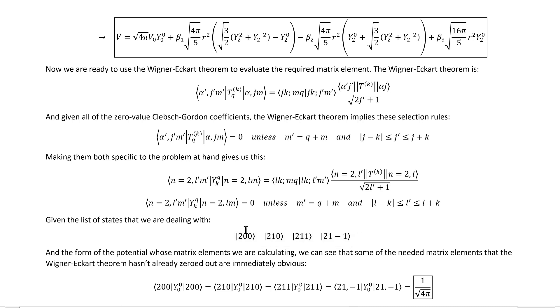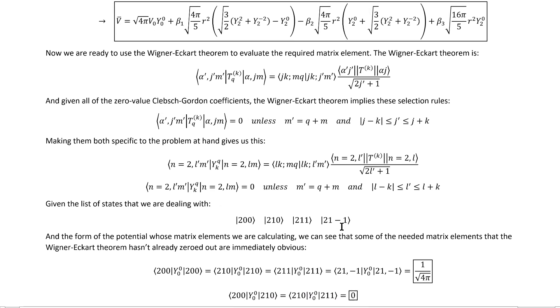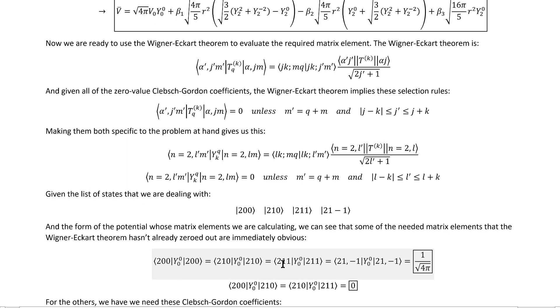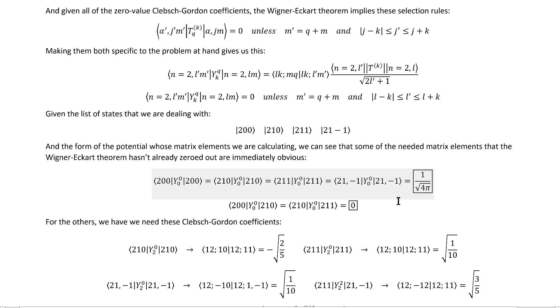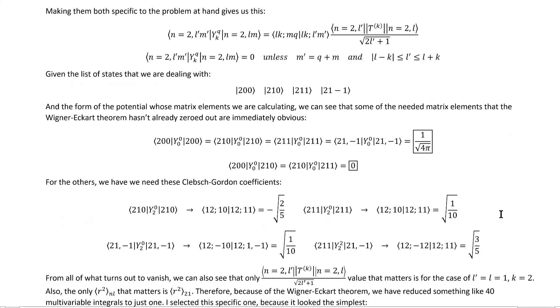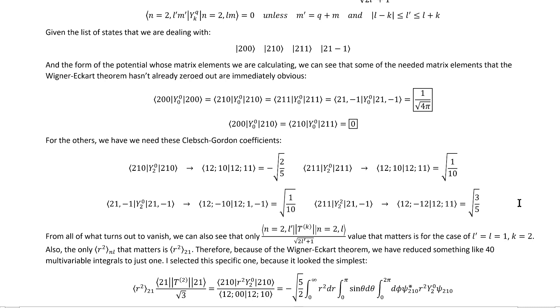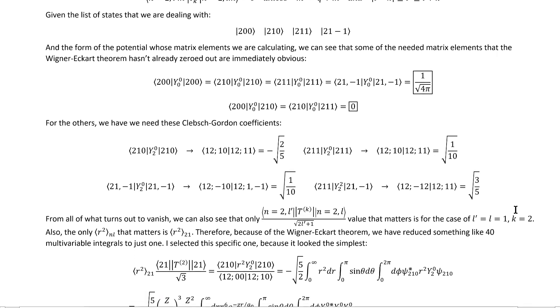If we go state by state and term by term, we actually find six matrix elements that are immediately evaluatable without having to use the Wigner-Eckart theorem or doing any integrals. And that works out because y0, 0 is just a constant so you can pull it out and then orthogonality handles the rest. Unfortunately, however, this doesn't handle all of the remaining matrix elements. There are a total of four of them that aren't immediately evaluatable and that correspond to non-zero Clebsch-Gordon coefficients.